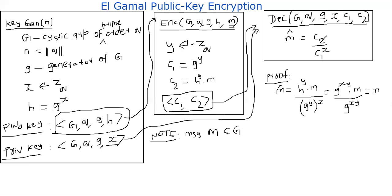He takes your C2 and divides it by C1 power x. Why would this work? How is C2 computed? C2 is computed by h power Y times M. And how is C1 computed? C1 is computed by g power Y. So we do some simple math now. G power XY in the denominator. What is h? h is computed by g power x. So g power XY, g power XY will cancel out, and you'll get M.